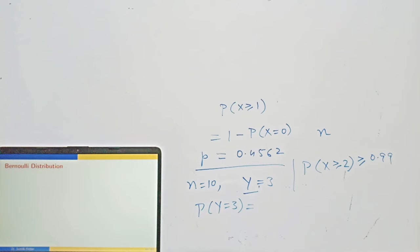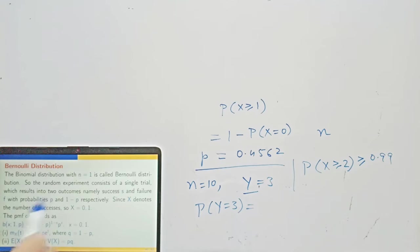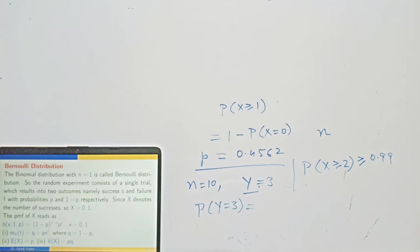Bernoulli distribution is a special case of binomial distribution. In the binomial distribution, if we choose n = 1 — that is, only one trial — with two outcomes success and failure with probabilities P and 1-P, then it is Bernoulli distribution. That is why the trials in binomial distribution are called Bernoulli trials. All formulas can be obtained from binomial distribution by substituting n = 1.